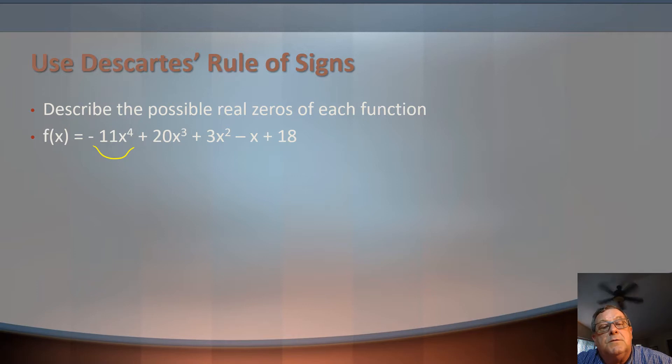We'll go positive, positive. I've got to go positive, negative here, and then negative, positive here. So I could have as many as 3 or, remember, I can reduce it by 2, or 1 positive real zeros.